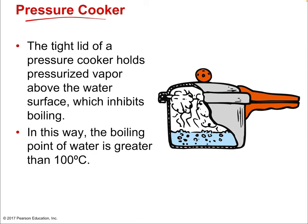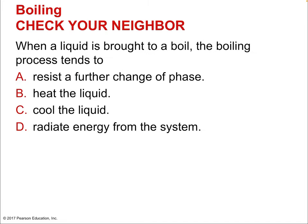A pressure cooker's tight lid allows water to reach temperatures above 100°C. It holds pressure in, inhibiting boiling — the bubbles need much greater pressure than one atmosphere to form. Pressure cooker gauges are often measured in atmospheres, going up to 10 bar. At higher pressures the boiling point rises well above 100°C. Boiling is a cooling process — when a liquid is brought to a boil, the boiling tends to cool the liquid.